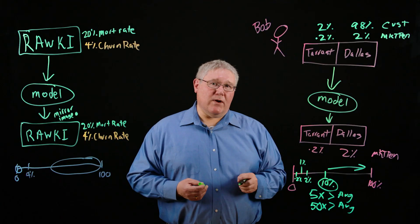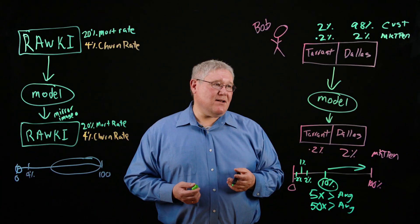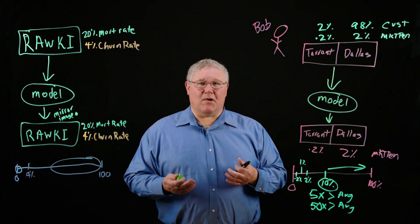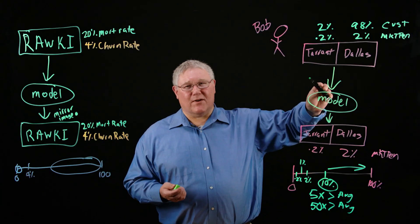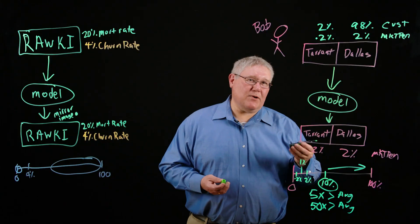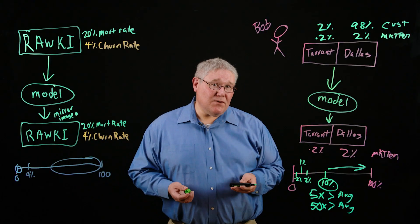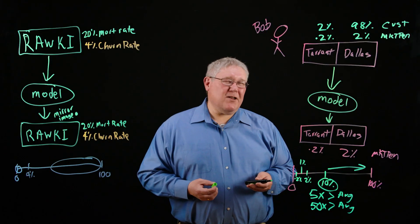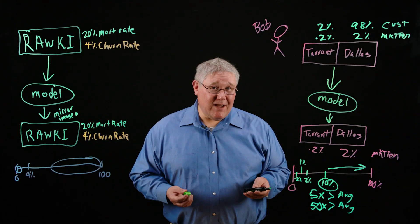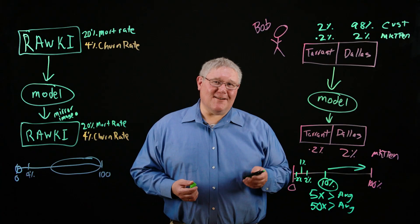The third thing — which can work but rarely does — is you can change the model so that you don't use, for example, county as a variable in your predictive model. That can work sometimes too, but it usually doesn't because of something called multicollinearity. But we won't get into that today.